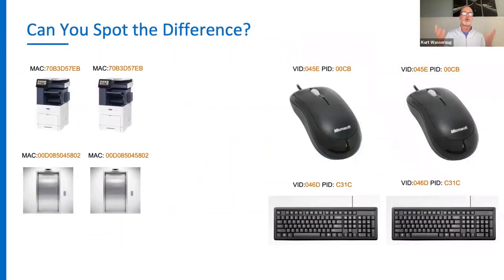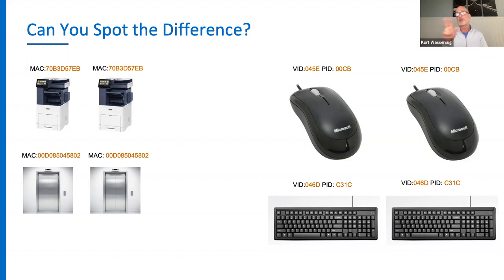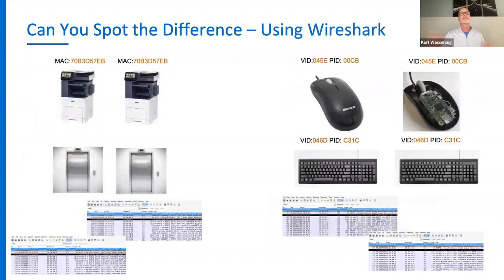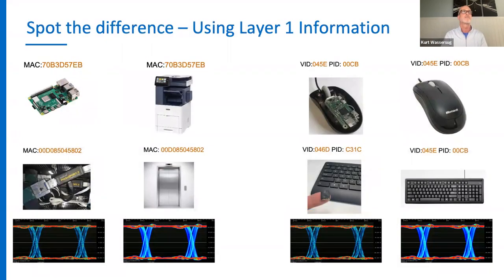Let me put this into real-world examples. Can you spot the difference? The printer on the left and the printer on the right are exactly the same. The elevator representing an IoT device — exactly the same. The Microsoft mouse — exactly the same. The keyboards — exactly the same. From a naked eye, they look alike. Now add traffic analysis — Wireshark — and you're not going to find the differences because these devices fly under the radar with traffic-based detection.